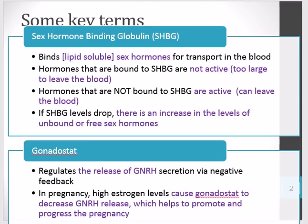Some main key terms to be aware of. First, sex hormone binding globulin, or SHBG, is a protein. Its purpose is to bind lipid-soluble sex hormones for transport in the blood — examples include estrogen, testosterone, and progesterone. Hormones bound to SHBG are not active; they are too large once bound to leave the blood and travel to the tissue.